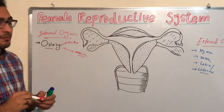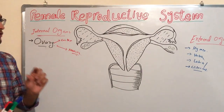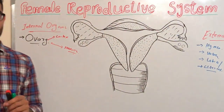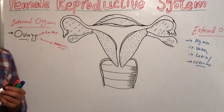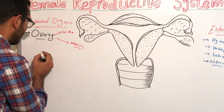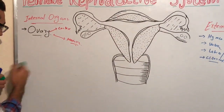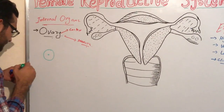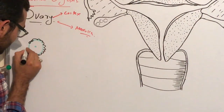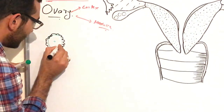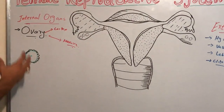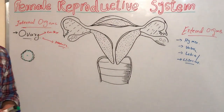In the cortex of the ovary there are primordial follicles. These primordial follicles are not matured until puberty. Around the primordial follicle, specific cells are known as the granulosa cells. These granulosa cells have specific types of factors which inhibit the maturation of the primordial follicles into formation of the ovum until puberty.